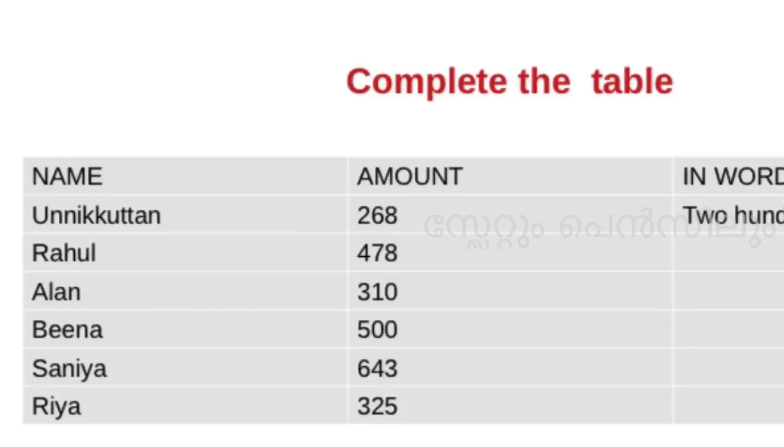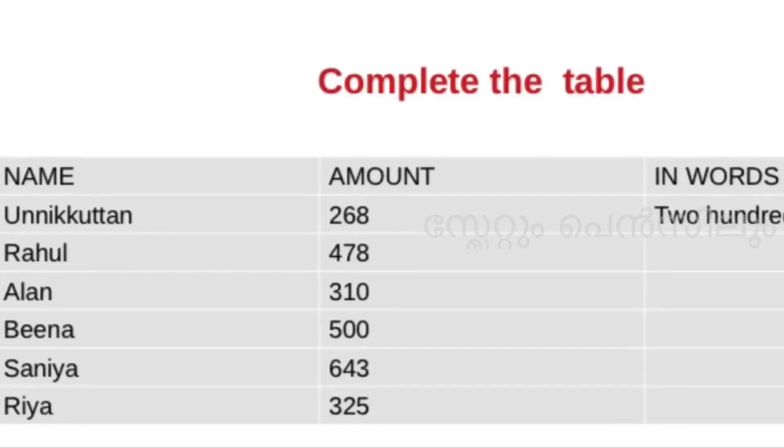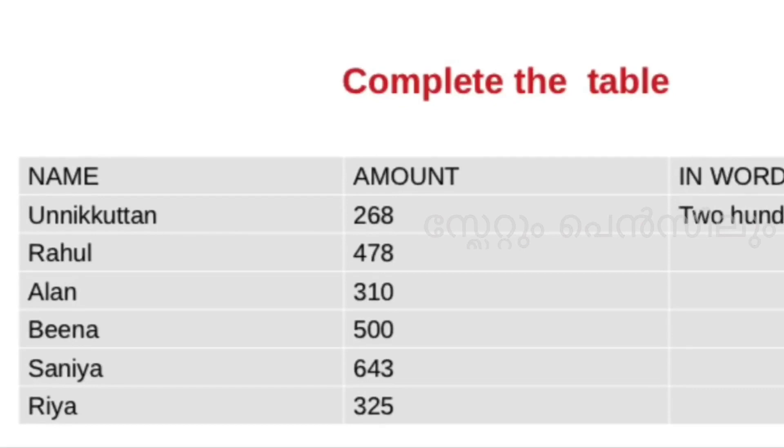The next entry is 310. Then Beena is 500. Then Sanya is 643.